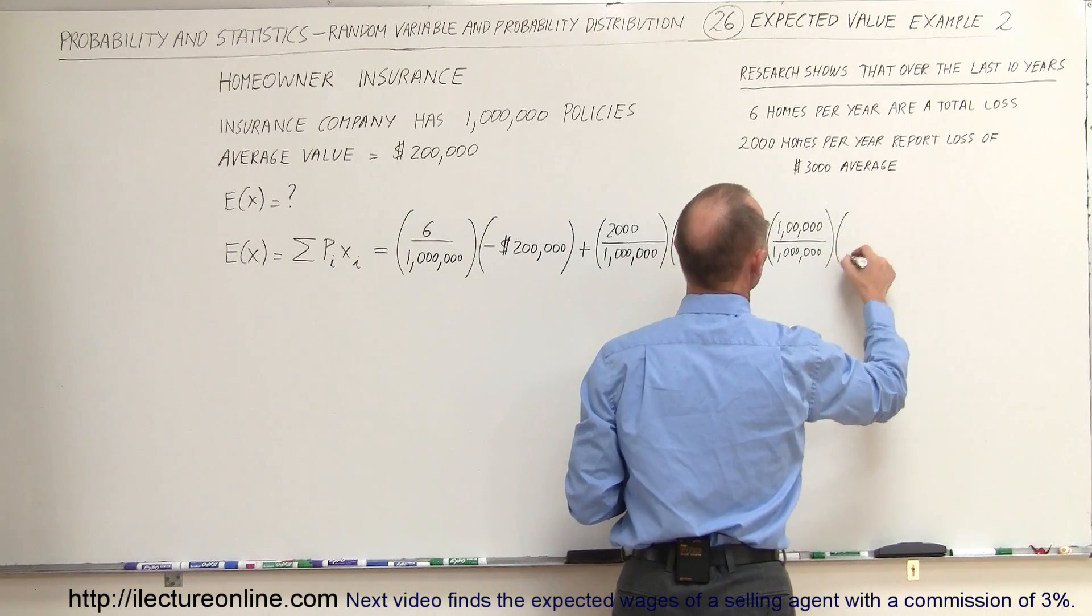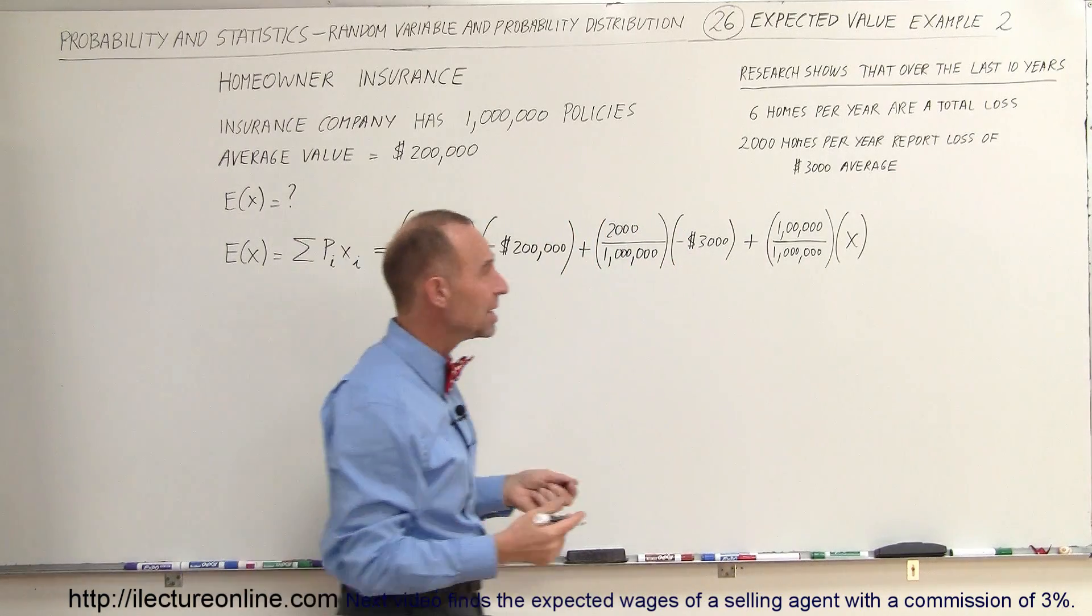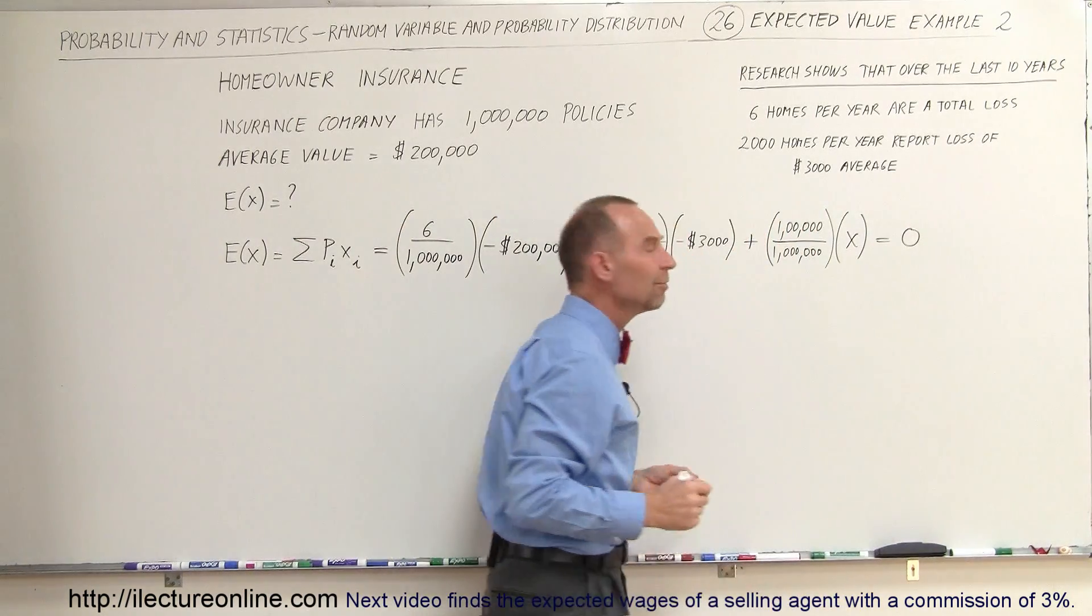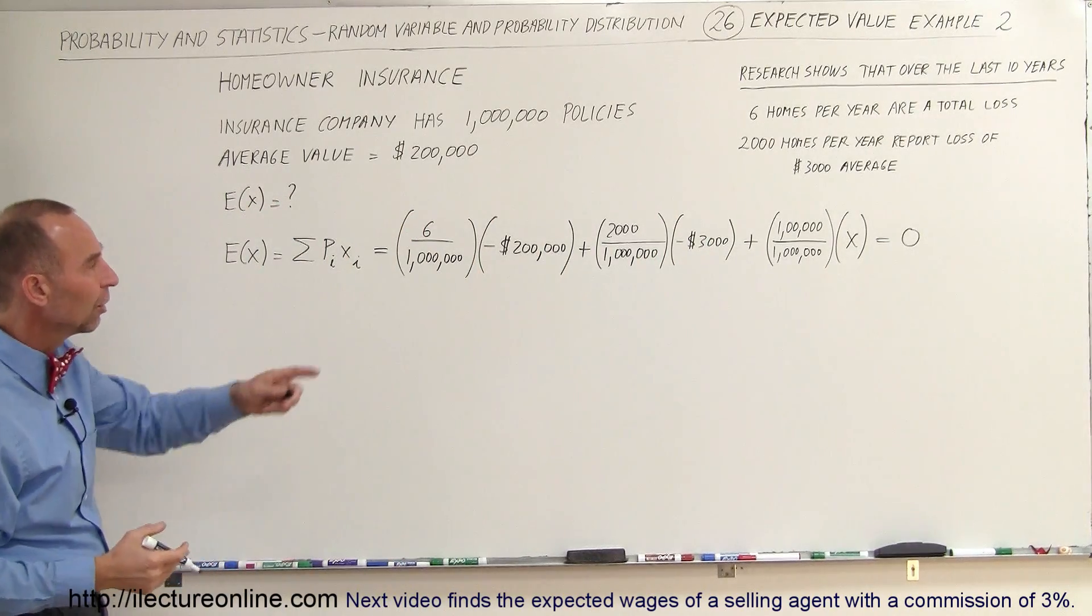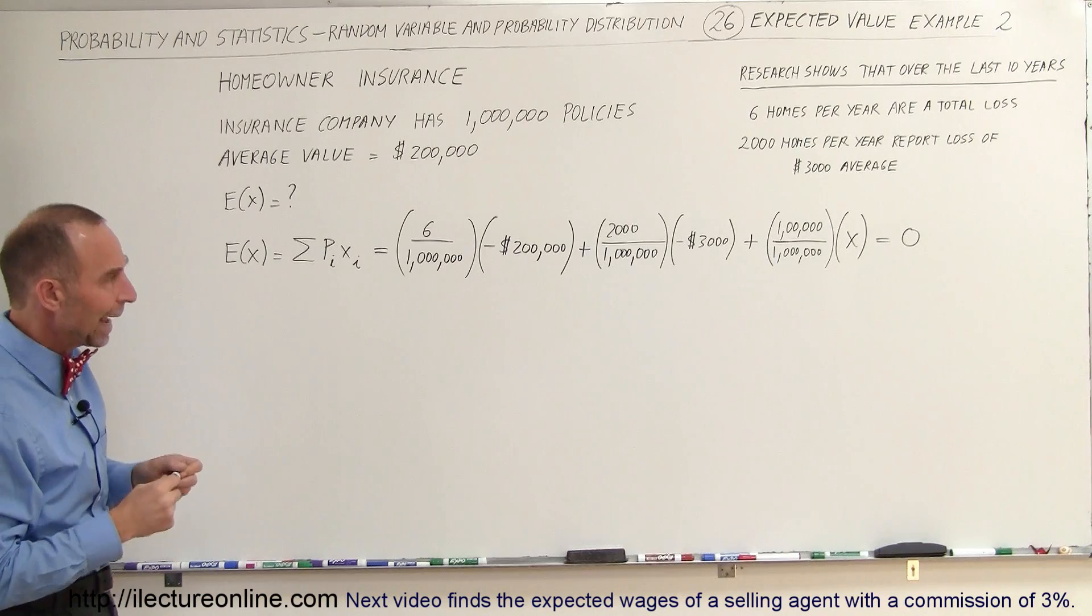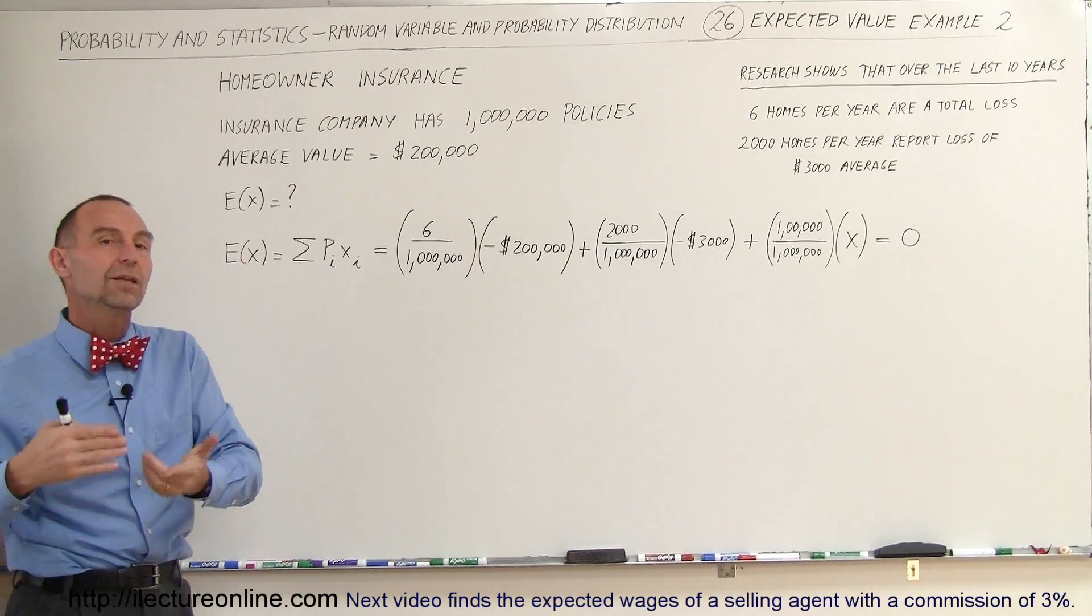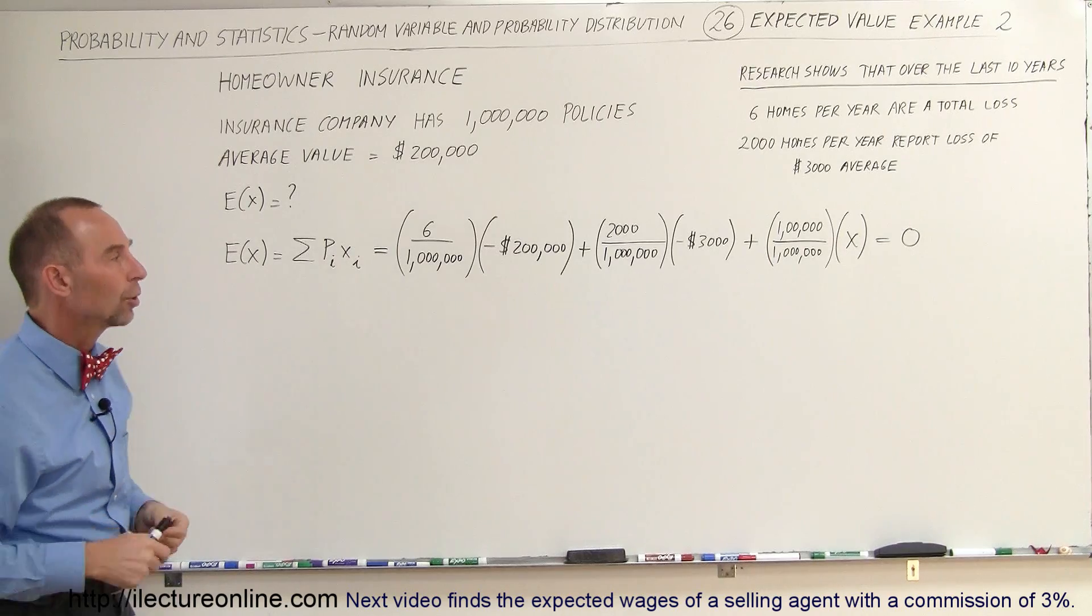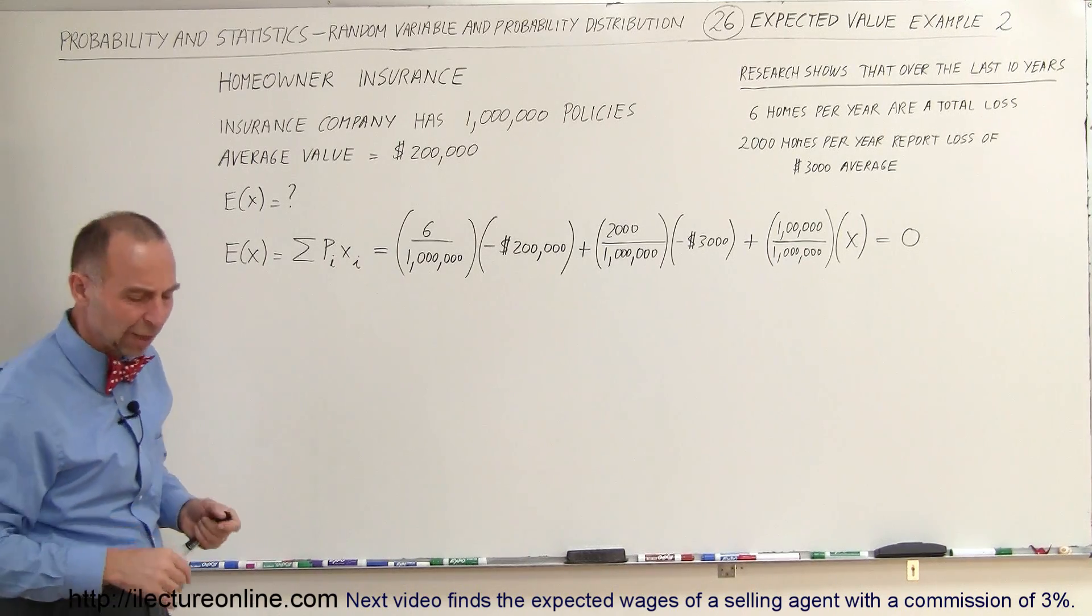The premium would have to be X. So the question is, what would X have to be? The break-even point would be zero, so that as much money would be coming in as would be paid out. We're looking for X, and the expected value in this case would be zero, assuming no profit and no coverage for expenses. So the minimum price that the payments would have to be.